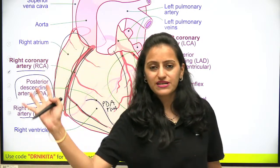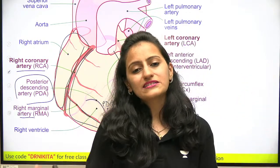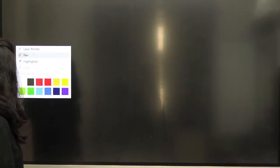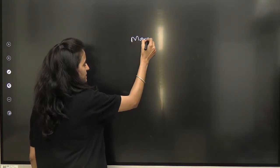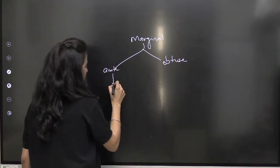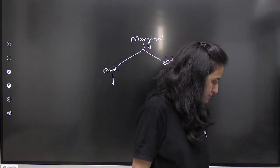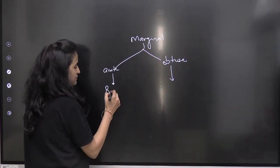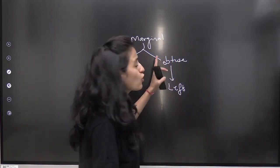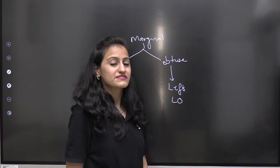The right coronary artery also gives the right marginal artery. There are marginal arteries on both the right and left sides — the acute marginal artery comes from the right coronary artery, and the obtuse marginal artery comes from the left circumflex. So right side is acute, left side is obtuse. This is a very important distinction.